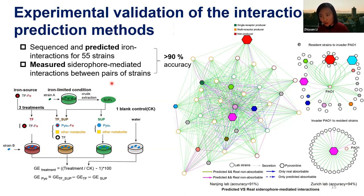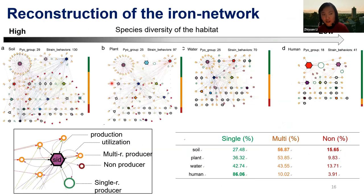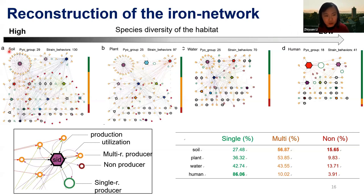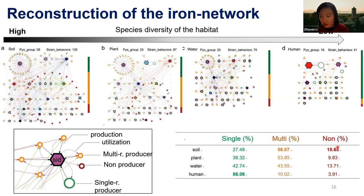We applied the same method to all 2,000 strains and here is the network. We classify the networks by habitat, since strains from different habitats probably do not interact with each other. From soil to plants to water to human, the diversity of the network decreases. Human pathogens get mostly sequenced — a large portion of the 2,000 come from human pathogens — but they have the least diversity. Single-receptor producers have the highest fraction in human, while multi-receptor producers and cheaters mostly exist in soil and water.